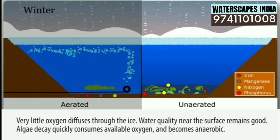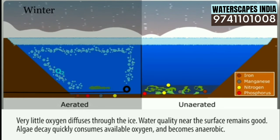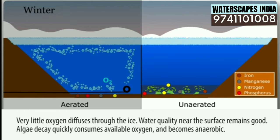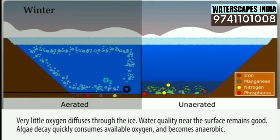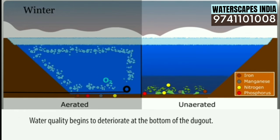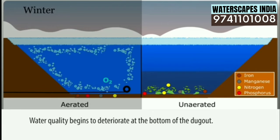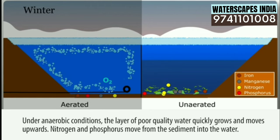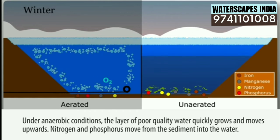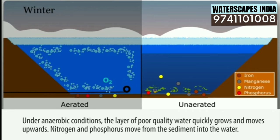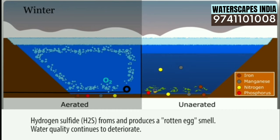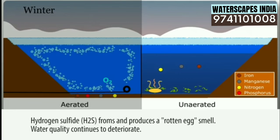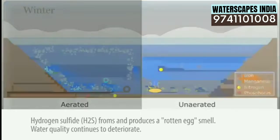Unaerated: very little oxygen diffuses through the ice. Water quality near the surface remains good, but algae decay quickly consumes available oxygen and conditions become anaerobic. Water quality begins to deteriorate at the bottom of the dugout. Under anaerobic conditions, the layer of poor quality water quickly grows and moves upwards. Nitrogen and phosphorus move from the sediment into the water. Hydrogen sulfide (H2S) forms and produces a rotten egg smell. Water quality continues to deteriorate.